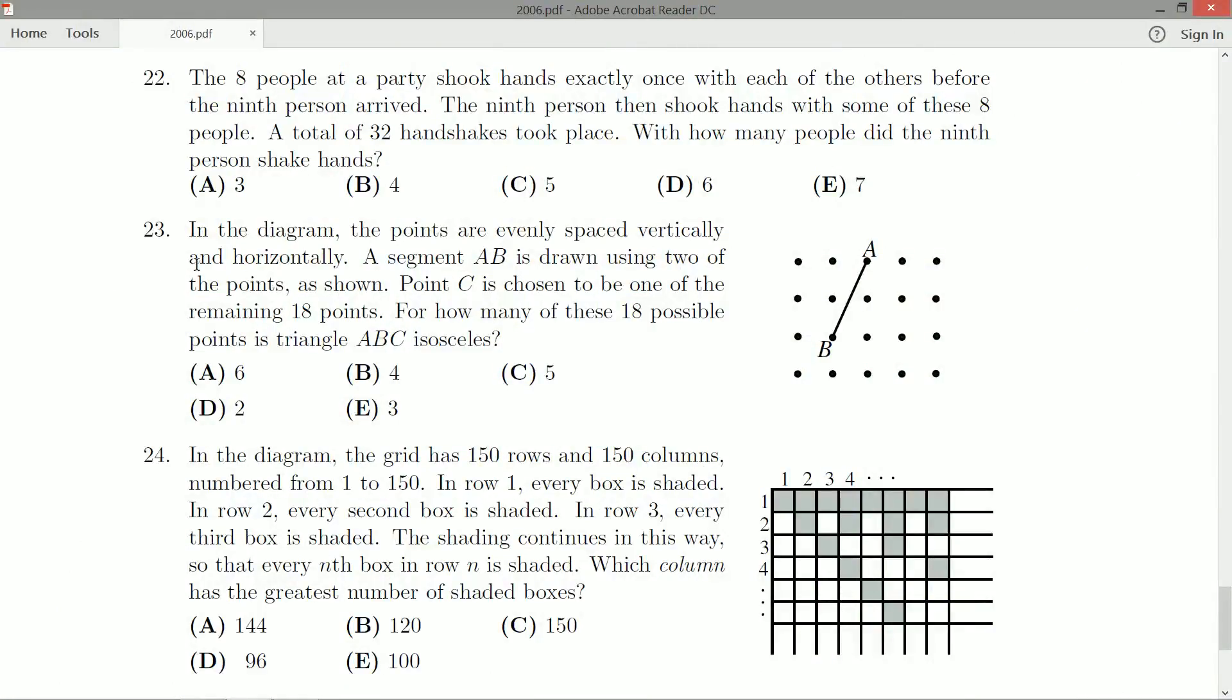In the diagram, the points are evenly spaced vertically and horizontally. A segment AB is drawn using two of the points as shown. Point C is chosen to be one of the remaining 18 points. For how many of these 18 points is triangle ABC isosceles?